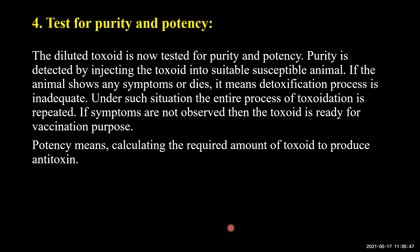The precipitate is dissolved and diluted to the required potency by adding sterile saline, then tested for purity and potency. Purity is assessed by injecting the toxoid into a suitable susceptible animal — if no symptoms develop, toxoidation is proper; if symptoms develop or the animal dies, detoxification is inadequate and the entire process of toxoidation is repeated. Potency is calculated as the required dose of toxoid needed to stimulate antitoxin production.